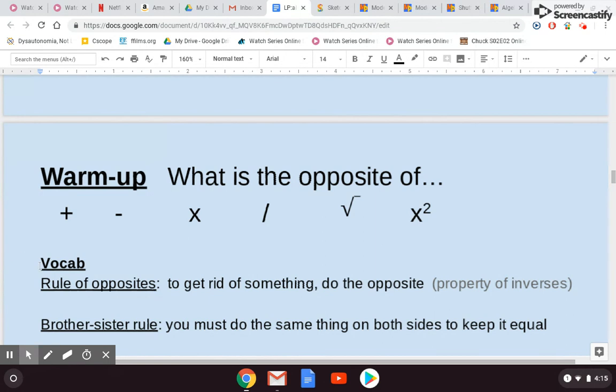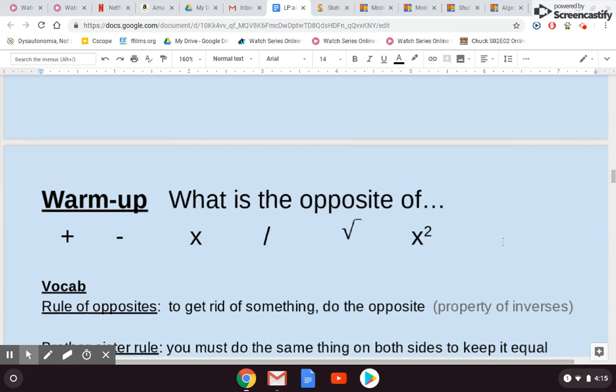From the email, make sure you've copied down the vocabulary. We have the rule of opposites, to get rid of something you do the opposite, and that's the property of inverses. The brother-sister rule is that you must do the same thing on both sides of the equal sign in order to keep it equal. These are my rules of algebra, and you'll use them all through high school and college. You probably won't hear teachers call them what I call them. In seventh grade, Ms. Shiget will call it the property of inverses, so make sure you listen for that and know it's the same thing.